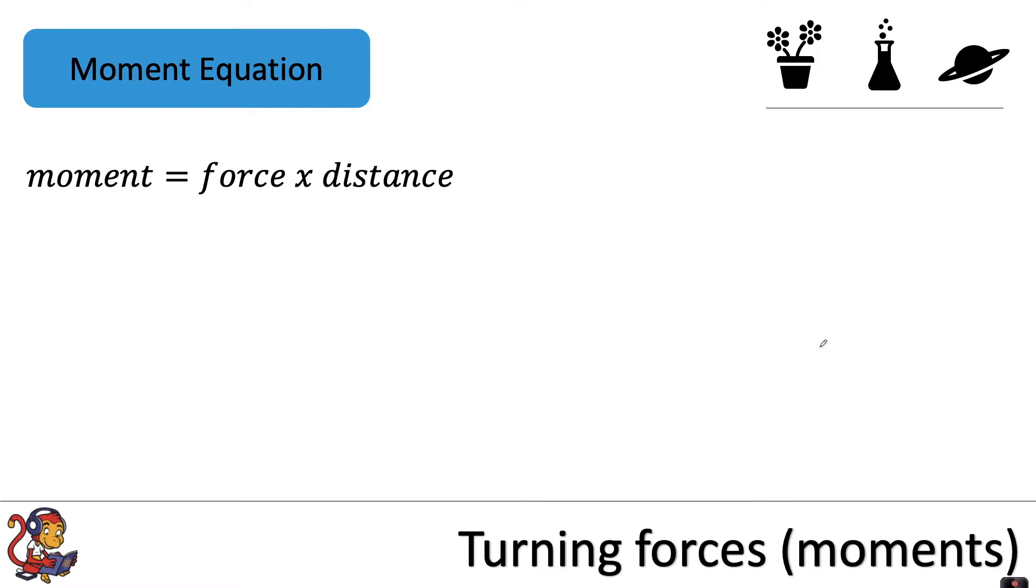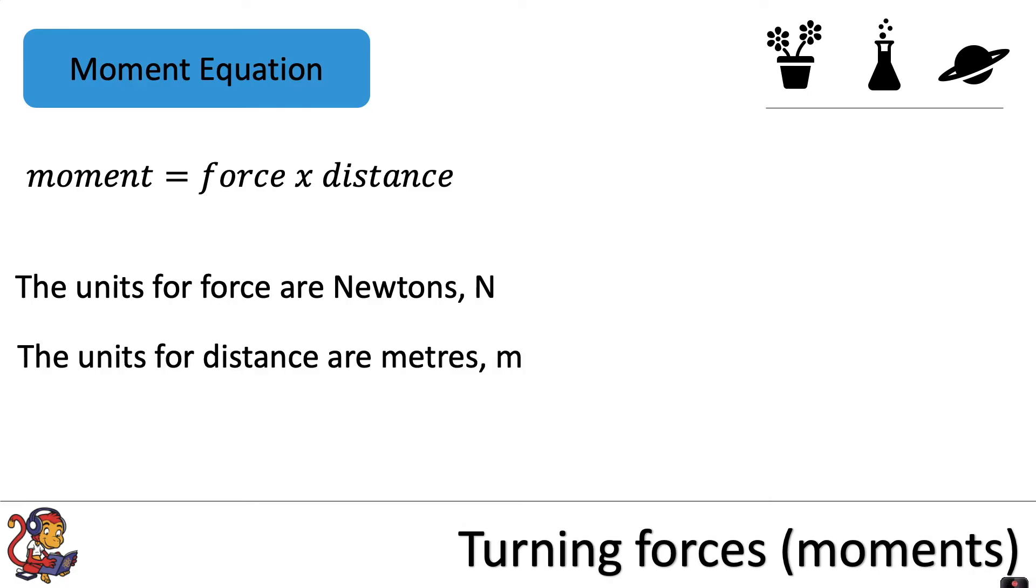This is the equation to calculate the moment: moment equals force times distance. The units for force are newtons, the units for distance are metres, so therefore the units for moment are newton metres. Because in our equation we've multiplied force by distance, our units for moment show that we're multiplying the force by the distance.